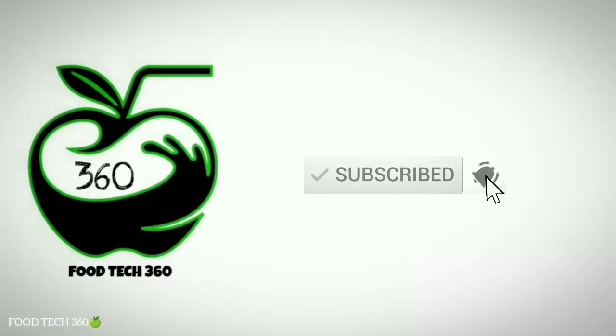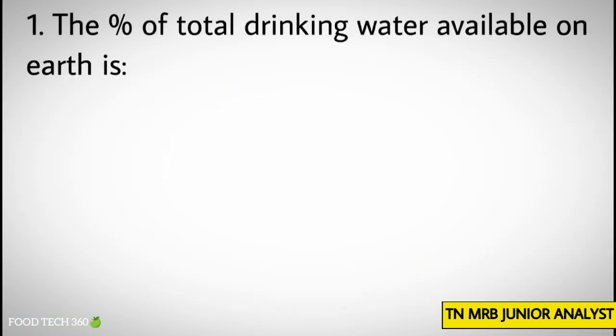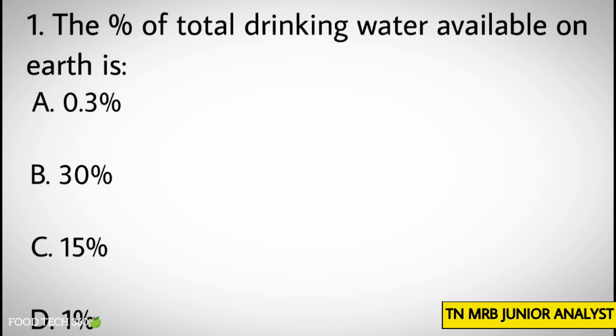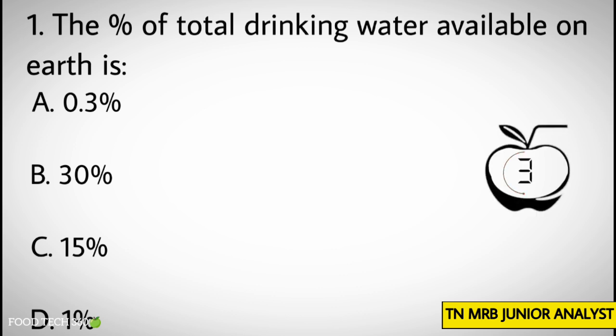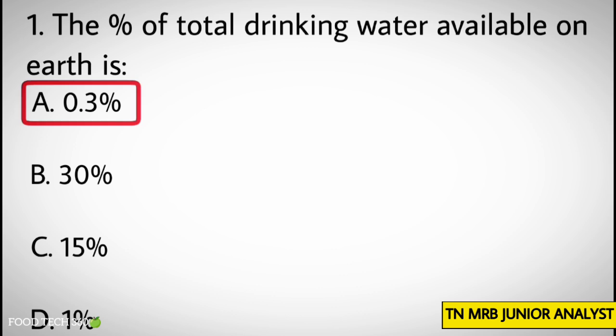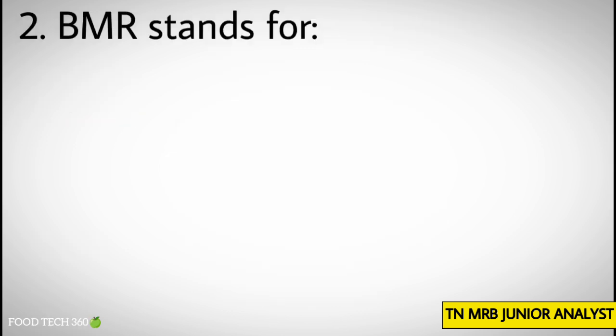Question number 1: The percentage of total drinking water available on earth is — Options: A. 0.3%, B. 30%, C. 15%, D. 1%. Correct answer: A. 0.3%.